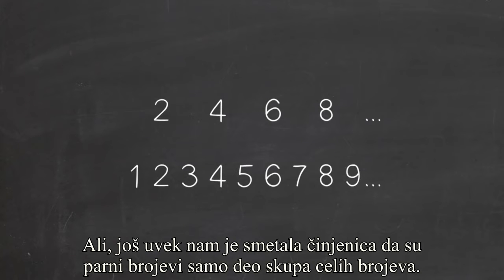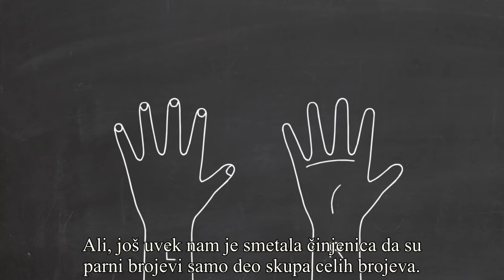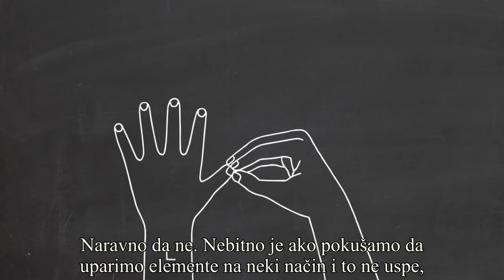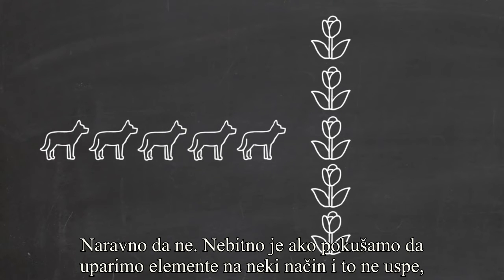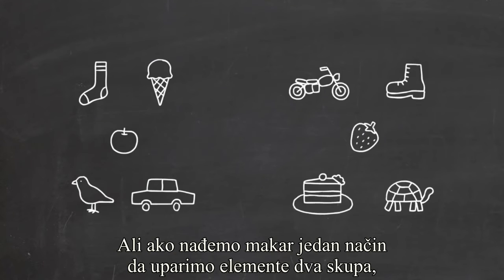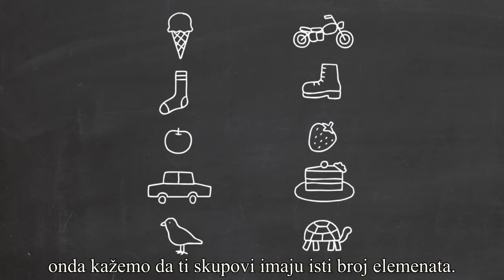But what still bothers us is our distress over the fact that the even numbers seem to be only part of the whole numbers. But does this convince you that I don't have the same number of fingers on my right hand as I do on my left? Of course not. It doesn't matter if you try to match the elements in some way and it doesn't work. That doesn't convince us of anything. If you can find one way in which the elements of two sets do match up, then we say those two sets have the same number of elements.